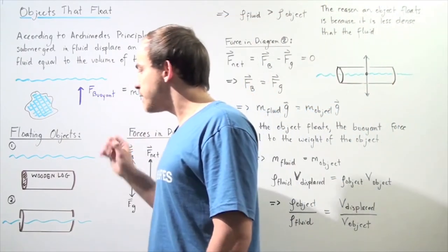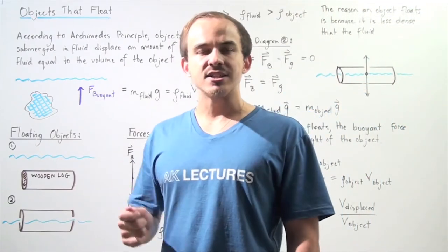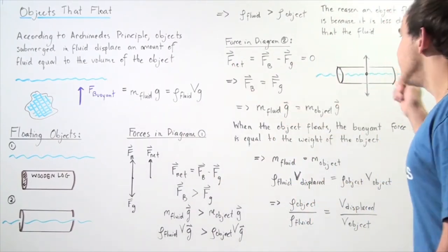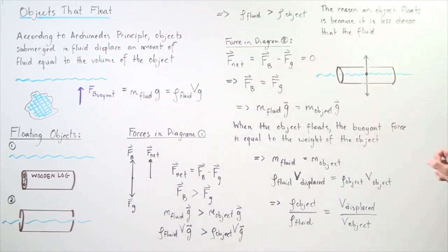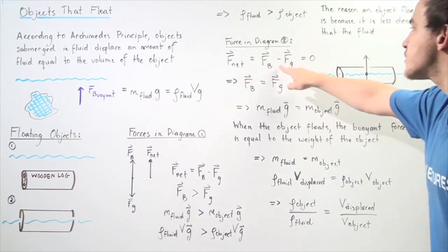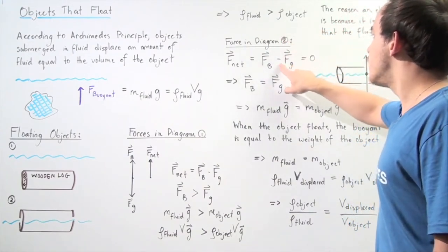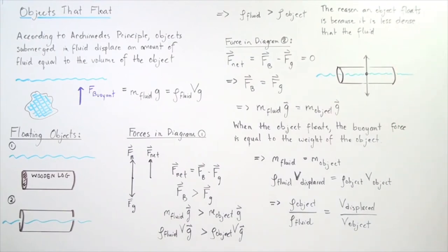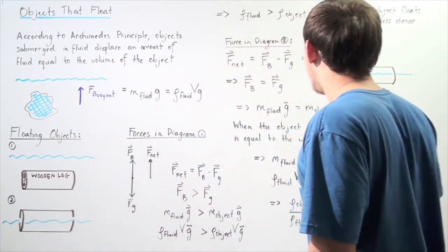Now let's examine diagram number two. Let's draw all the forces acting on it and see if we can get any useful equation from those forces. When the object shoots back up onto the surface, eventually it comes into static equilibrium — the net force acting on the object along the y-axis is zero. The net force equals the buoyant force pointing upward minus the force of gravity pointing downward, and that equals zero. Rearranging, the buoyant force acting on our floating object equals the gravitational force acting on that object.